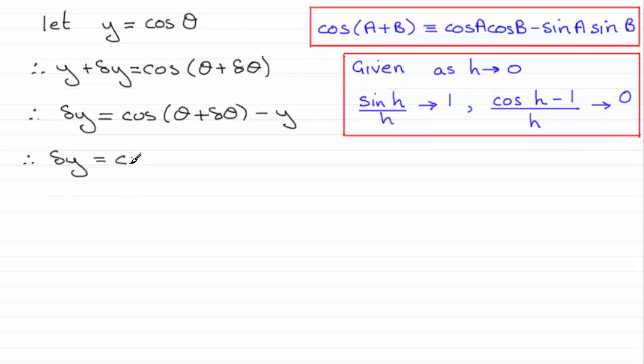So we end up with the cosine of theta, cosine of delta theta minus the sine of theta sin delta theta. And then we've got the minus y here, which I replace now with cosine of theta.